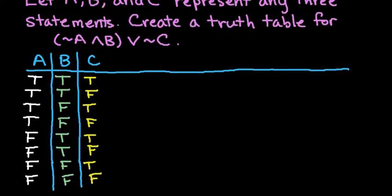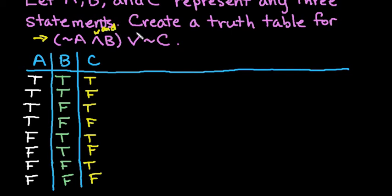Now let's get into creating everything we need. Ultimately, we are going to evaluate the statement: not A, and B, or not C. Remember that the tilde is read as 'not' — it is the complement of the statement, meaning it's the opposite. The wedge symbol means 'and,' which means both must be true for it to be true. And 'or' means that one or the other or both must be true.